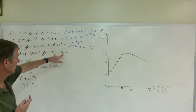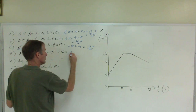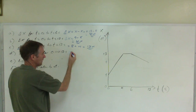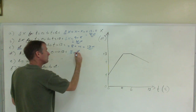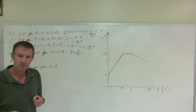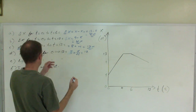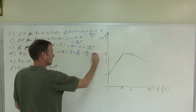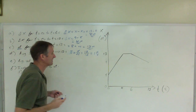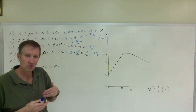Average speed for 0 to 12 seconds: average speed is total distance over the time interval. We've already calculated the distance as 12 meters over a time of 12 seconds. That's 12 over 12, which is 1 meter per second. The object never actually travels at that speed — it's just an average over the interval.